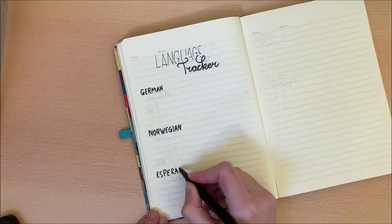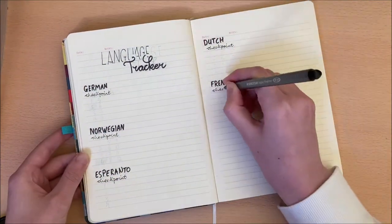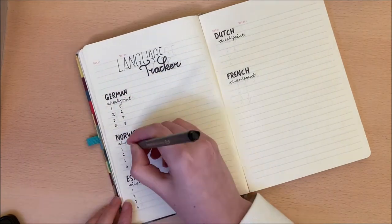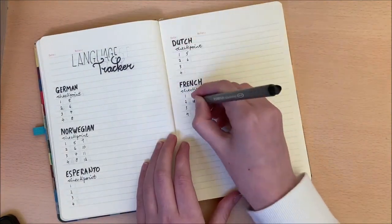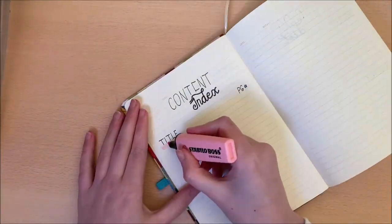Finally in my 2021 spread I have included a language tracker for each of the target languages that I want to focus on. I've just quickly jotted down the amount of checkpoints that are there in Duolingo for each language and this is a handy way to keep track of your progress.